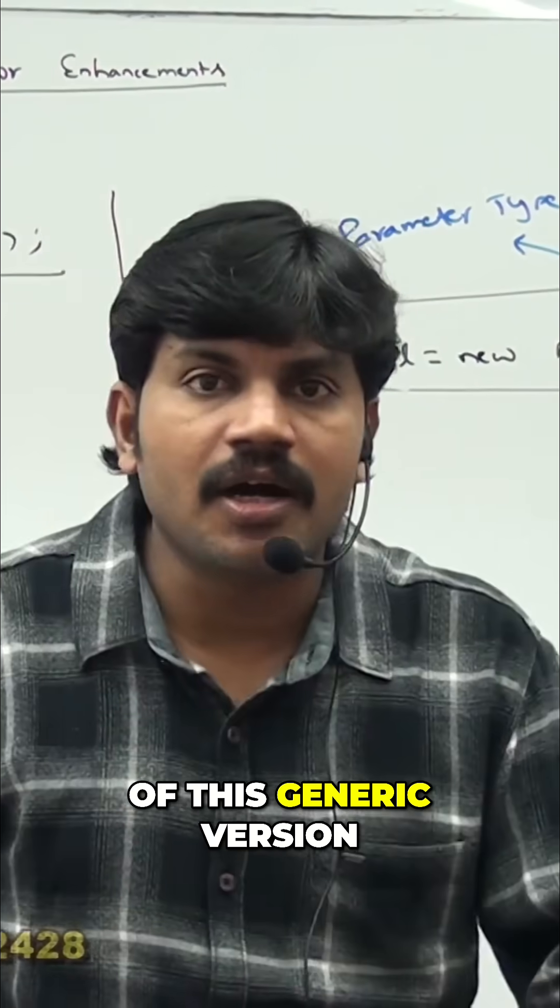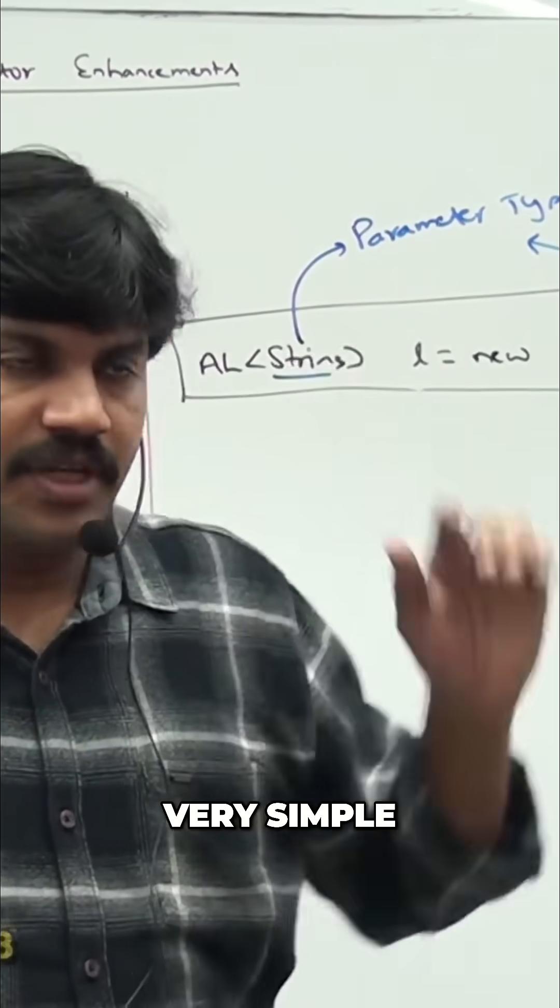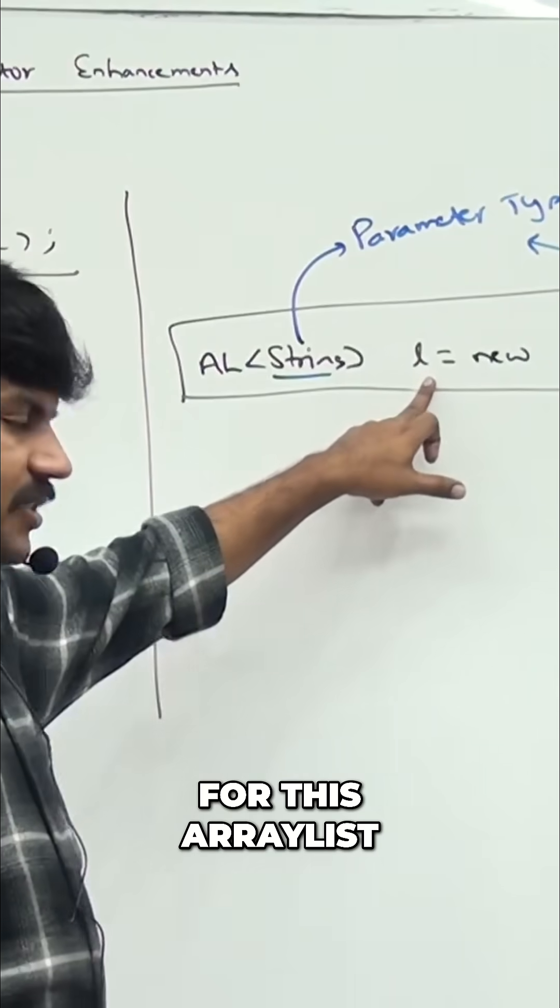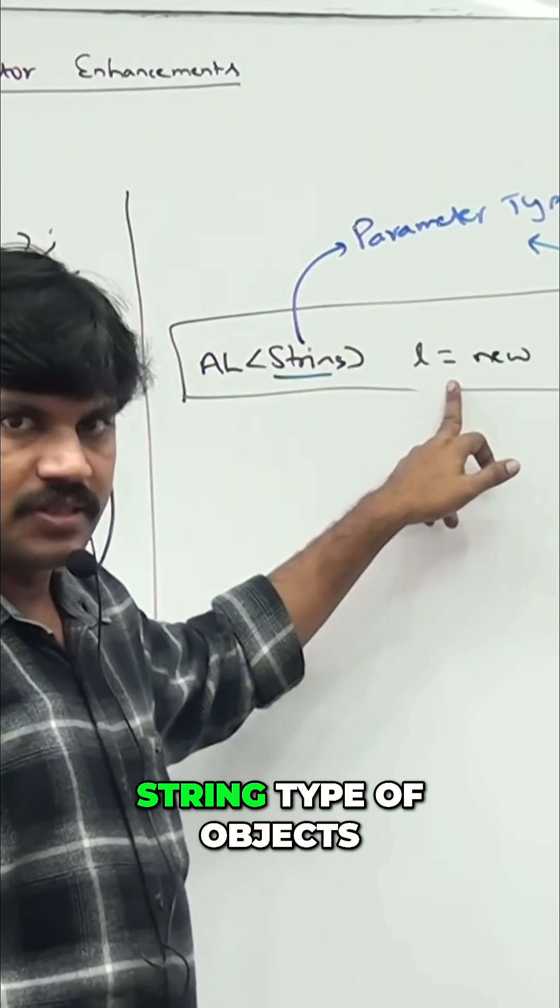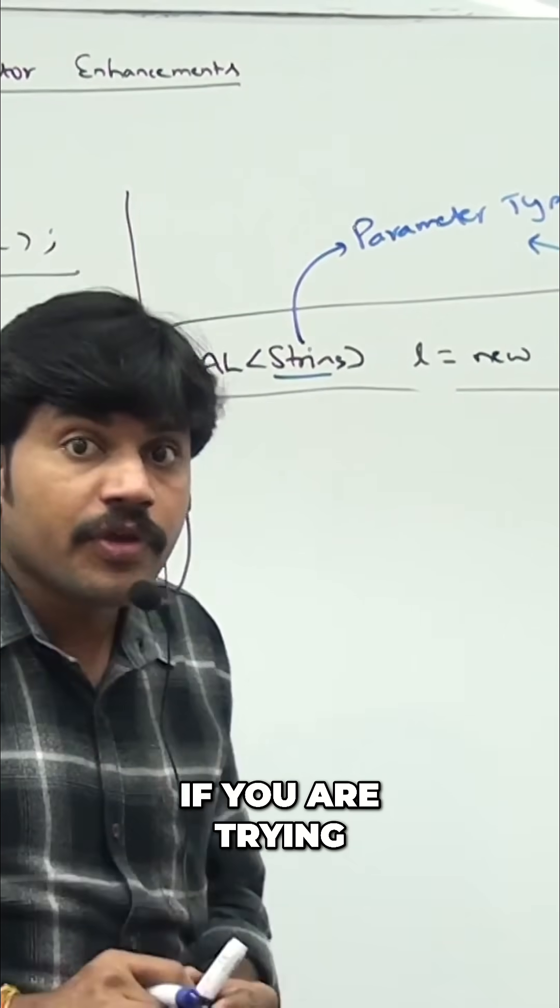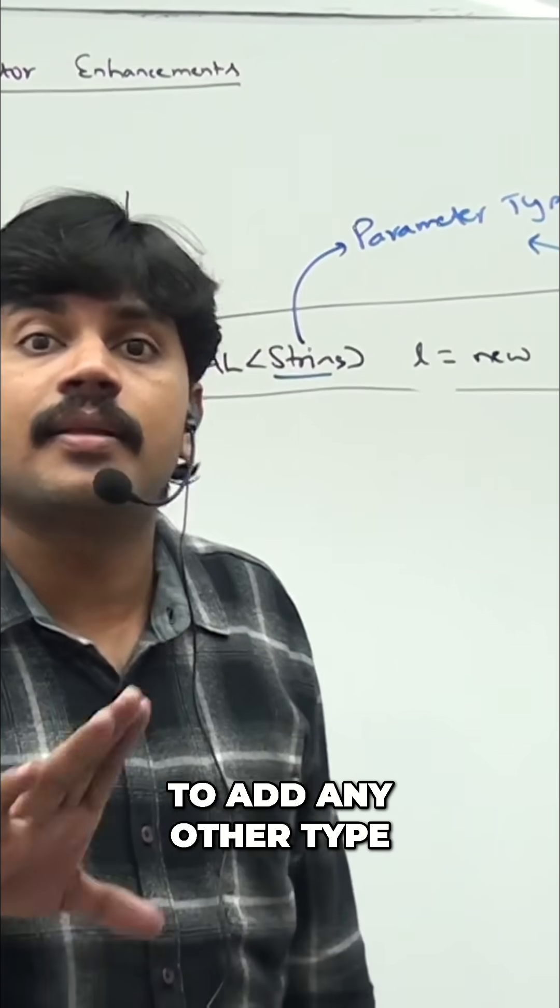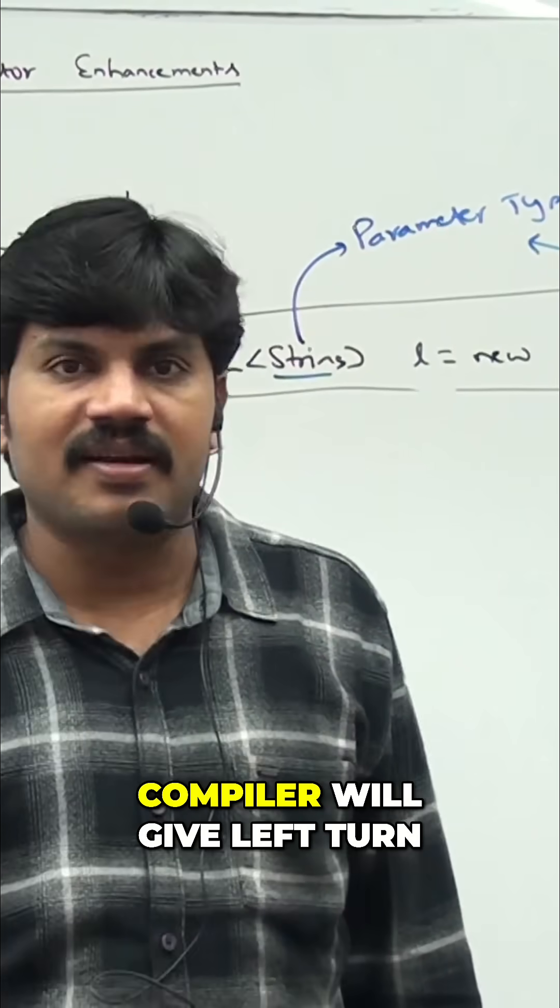What is the advantage of this generic version? Very simple. For this ArrayList, we can add only String type of objects. By mistake, if you are trying to add any other type, the compiler will give an error.